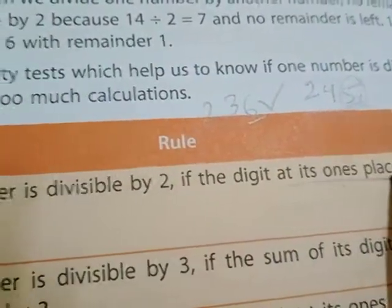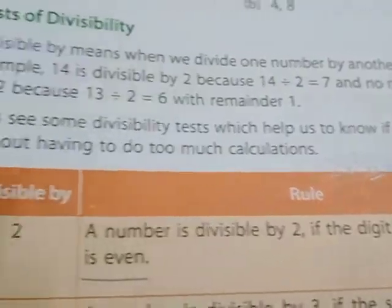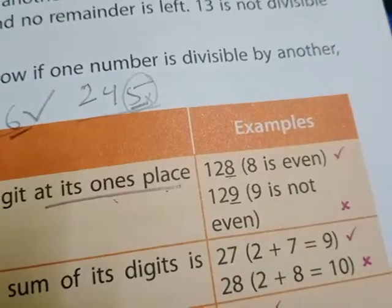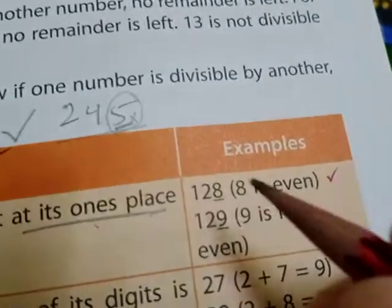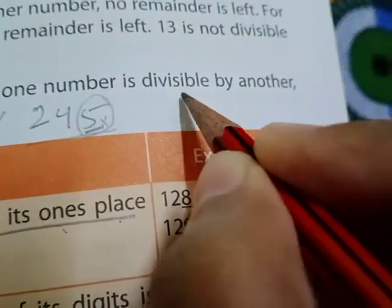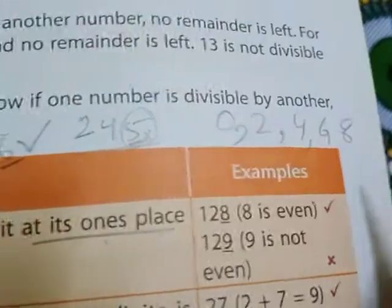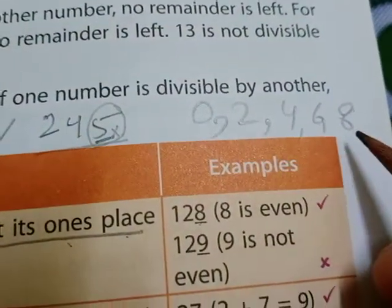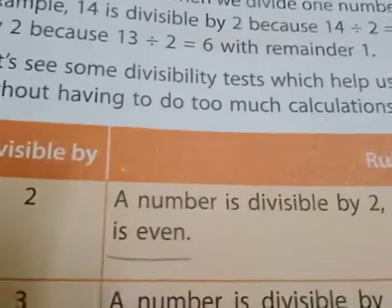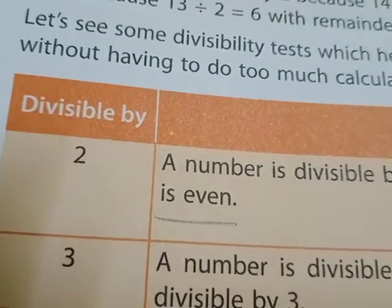So to summarize: any number is divisible by two if the digit at its one's place is even. Keep in mind that if the one's place digit is zero, two, four, six, or eight — any of these five digits — then the number is divisible by two, or we can say two is a factor of that number.